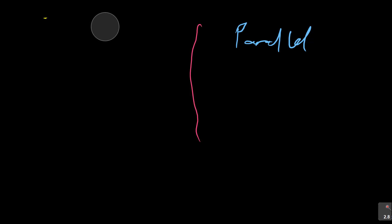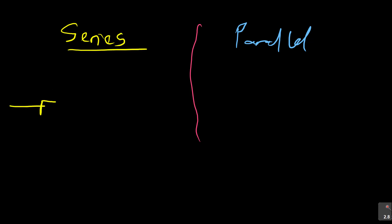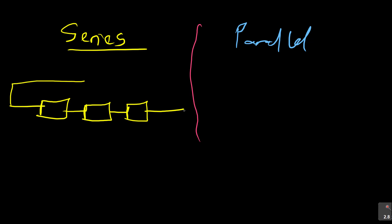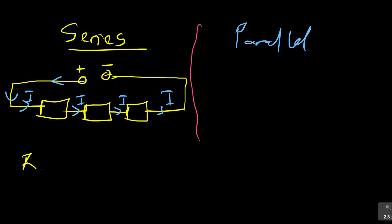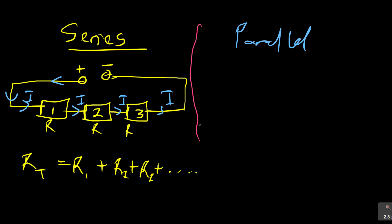Series resistors follow one after the other. You know it's a series resistor because the current flowing — if this is plus/minus — will flow through each resistor in turn. Current I through the first resistor, current I through the second, current I through the third, and coming out is current I. To find the total resistance: R total equals R1 plus R2 plus R3, plus whatever resistors follow.